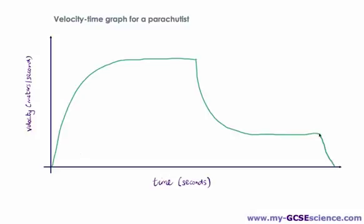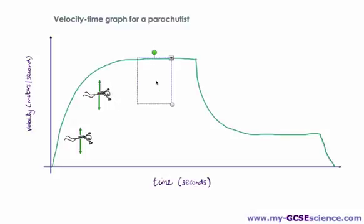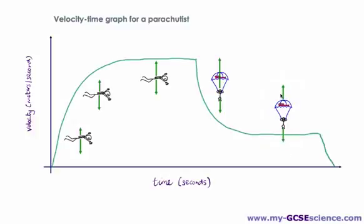When the parachute opens, the velocity decreases very rapidly — the person slows down — and eventually reaches a new terminal velocity, a new steady speed which is much slower. Then eventually they touch the ground. You should be able to relate this graph to the different force diagrams shown previously. The first part corresponds to the downward force being much bigger than the upward force, so the person accelerates quickly. The flat part corresponds to air resistance and weight being equal and balanced — resultant force is zero — so the person falls at a steady speed. The steep drop is when the parachute opens, showing a much larger upward force due to air resistance.